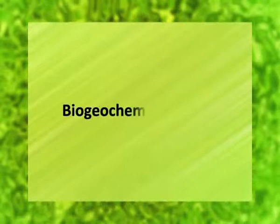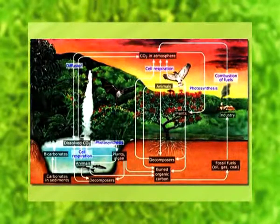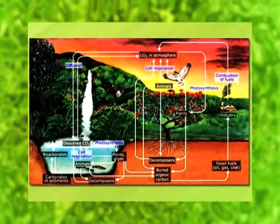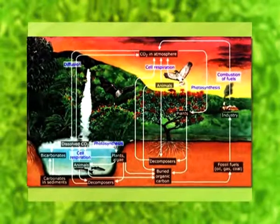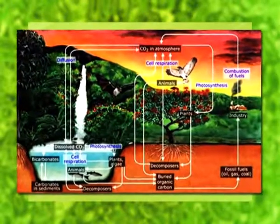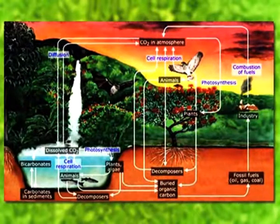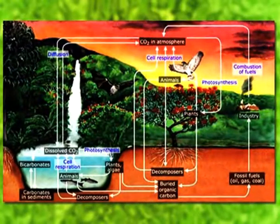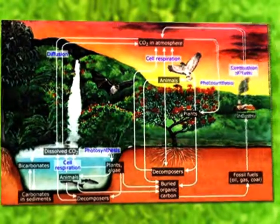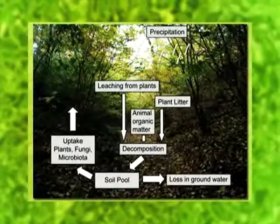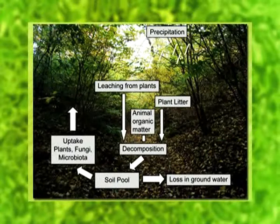The final step in the functioning of energy flow is biogeochemical cycling. Biogeochemical cycling is the cycling movement of materials from their reservoirs — for example, air, water, and soil — to the living components and back to reservoirs. It is called nutrient cycling or biogeochemical cycles.